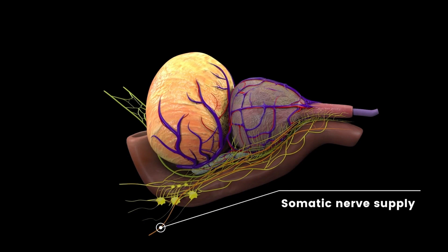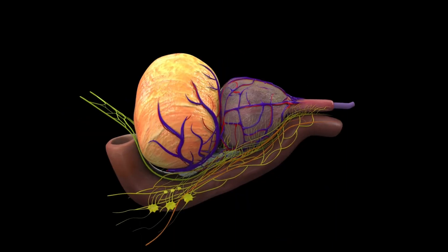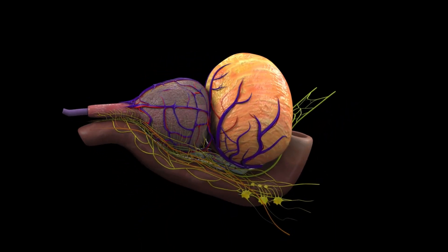The sympathetic contribution comes from the hypogastric nerve of the superior hypogastric plexus and upper lumbar communication of the intermesenteric plexus and the L3 and L4 splanchnic nerves.